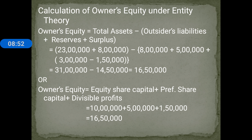So: Total assets ₹31 lakh minus (outsider liabilities ₹8 lakh + reserves ₹5 lakh + surplus ₹1 lakh 50,000) = ₹31 lakh − ₹14 lakh 50,000 = ₹16 lakh 50,000. So owners' equity under entity theory is ₹16 lakh 50,000.